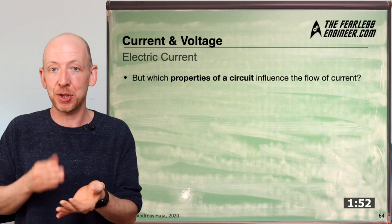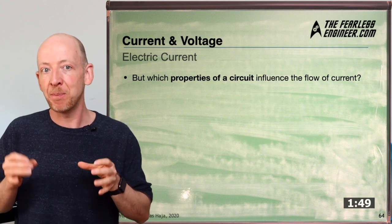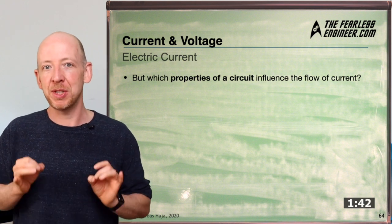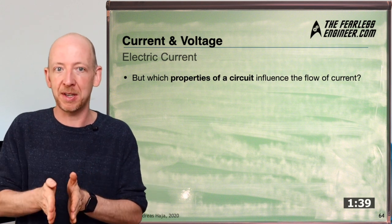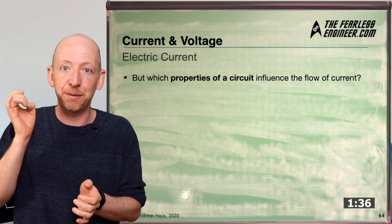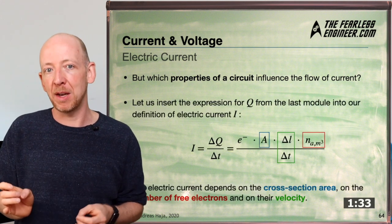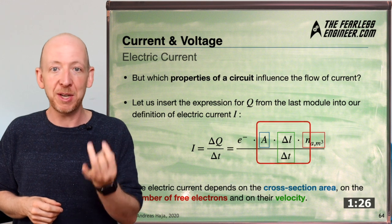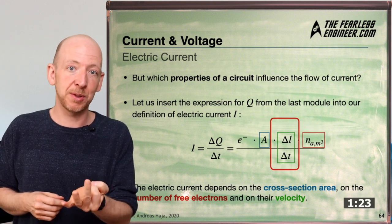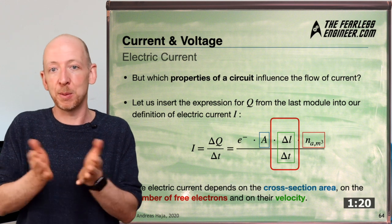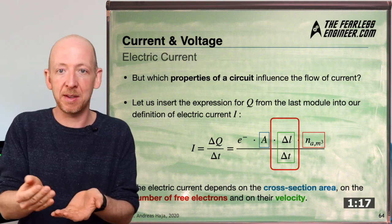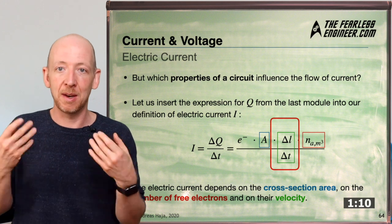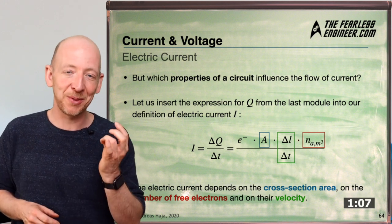Now that we have the definition of current as charge per time, let's discuss which properties of a circuit influence the flow of current. From the last video on charges in a wire, we have a definition for charge that depends on the volume of the wire — its cross-section area A and length L — and on the free electron density Na. If we insert this into our definition of current, we find that the ratio of length and time can be interpreted as the speed or drift velocity of the electrons, since speed is defined as length per time.